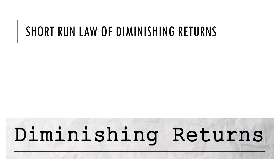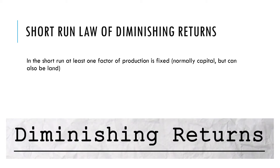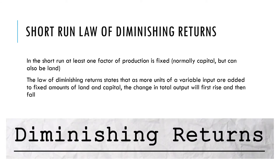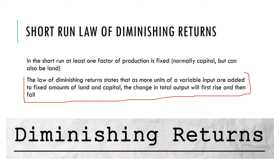Now let's look at what we mean by diminishing returns. In the short run, at least one factor of production is fixed — normally capital, but it can also be land. The law of diminishing returns states that as more units of a variable input are added to fixed amounts of land and capital, the change in total output will first rise and then fall. So as we add more workers to use our machine, initially we get a rise in total output, but then ultimately, if we keep adding more and more workers, we may get a fall in total output.